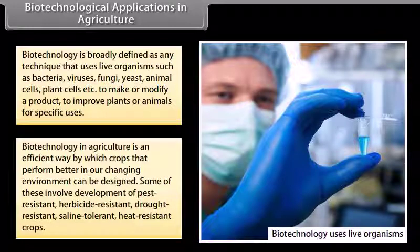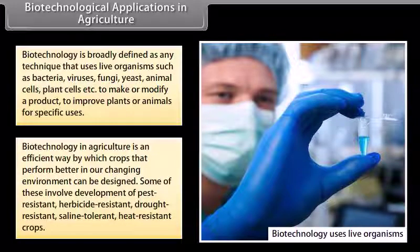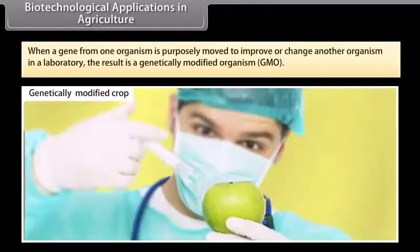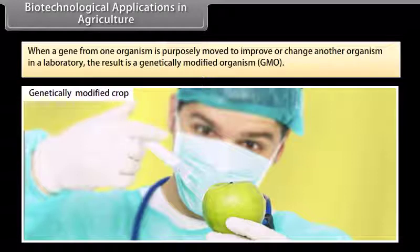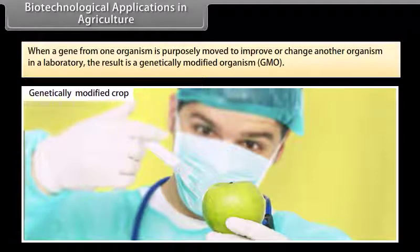Some of these involve development of pest-resistant, herbicide-resistant, drought-resistant, saline-tolerant, and heat-resistant crops. When a gene from one organism is purposely moved to improve or change another organism in a laboratory, the result is a genetically modified organism, or GMO.